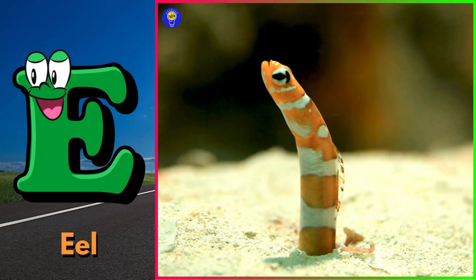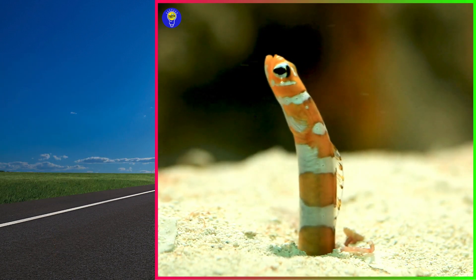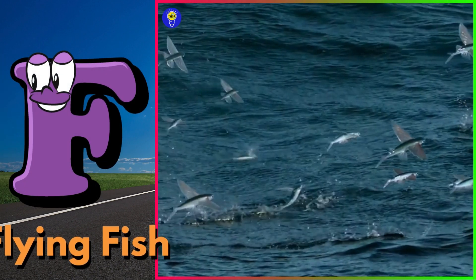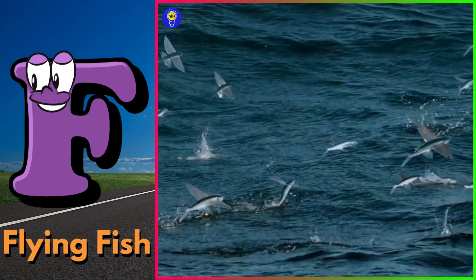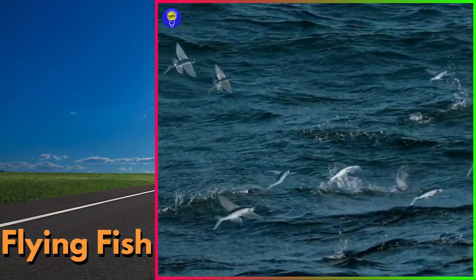E is for eel. Eh, eh, eel. F is for flying fish. Fuh, fuh, flying fish.